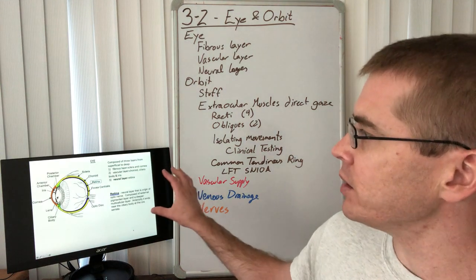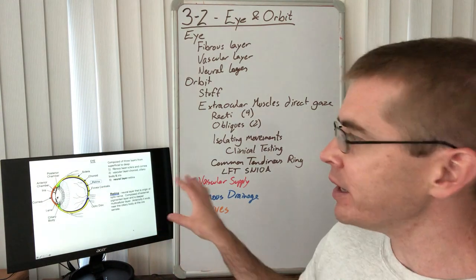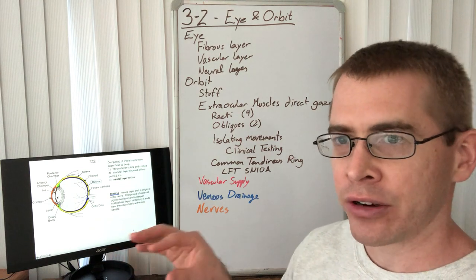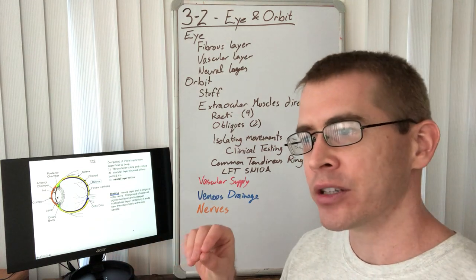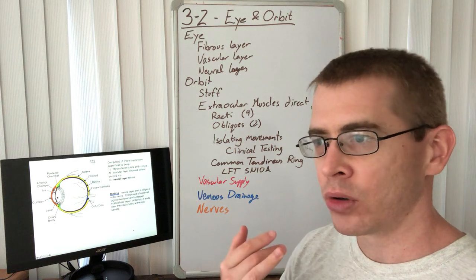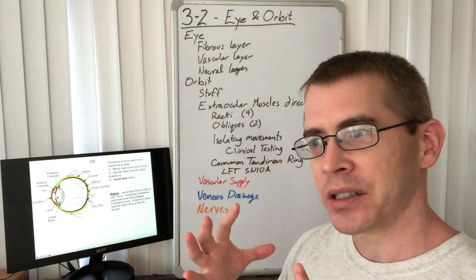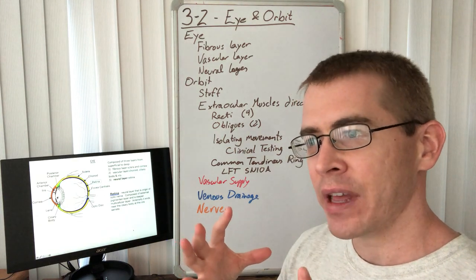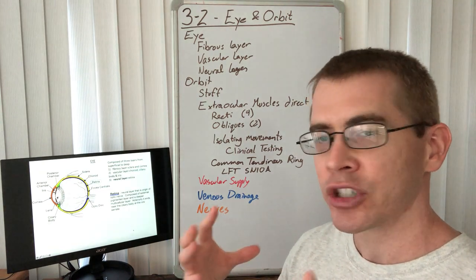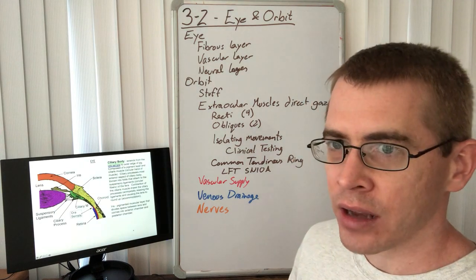Deep to that layer, on the innermost portion of the eye, is the neural layer called the retina. It is composed of the rods and cones as well as the bipolar and ganglion cells that receive photonic energy and transfer it into an action potential that the central nervous system can recognize.